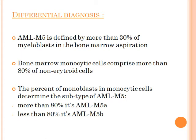AML M5 is defined by more than 30 percent of myeloblasts in the bone marrow aspiration, with bone marrow monocytic cells comprising more than 80 percent of non-erythroid cells. The percent of monoblasts in monocytic cells determines the subtype: more than 80 percent is AML M5a, and less than 80 percent is AML M5b.